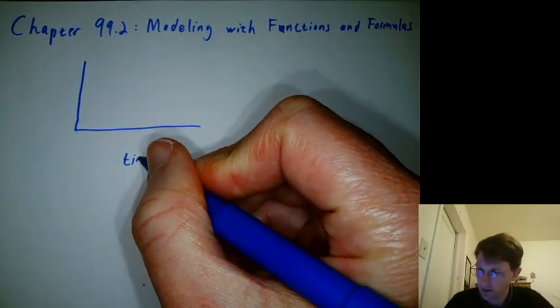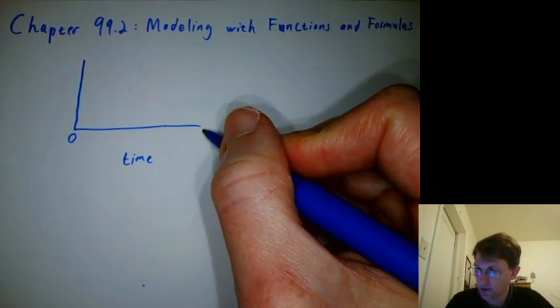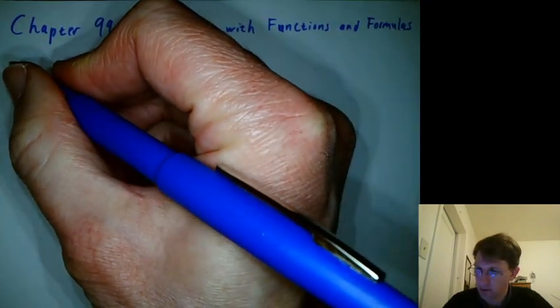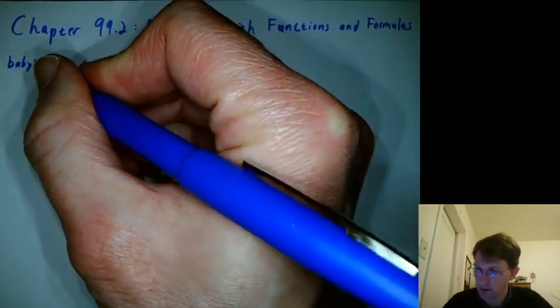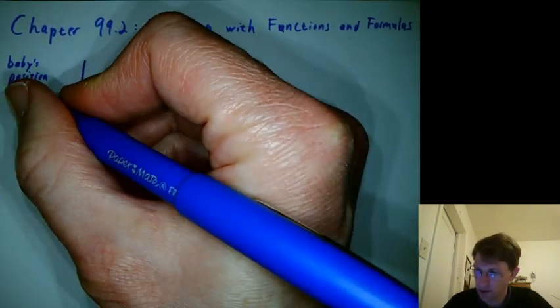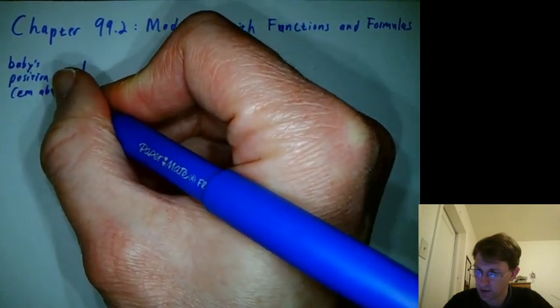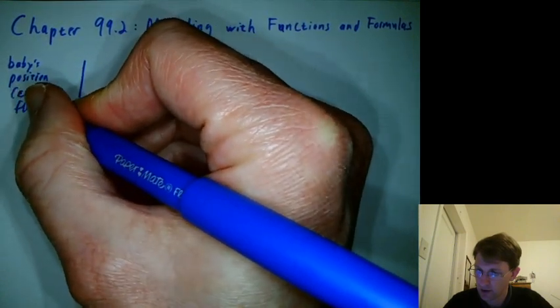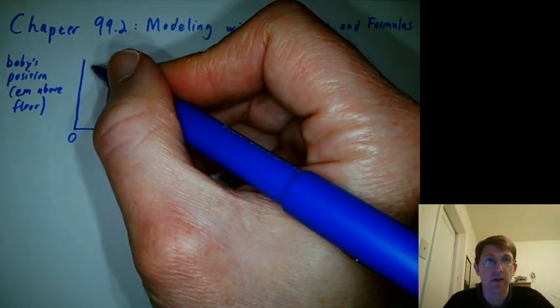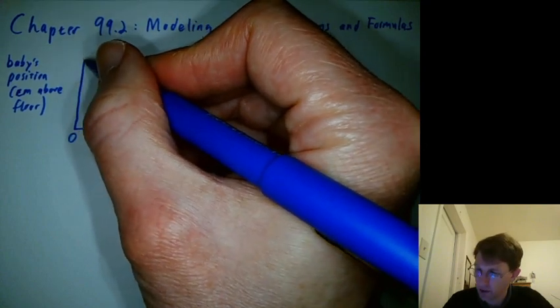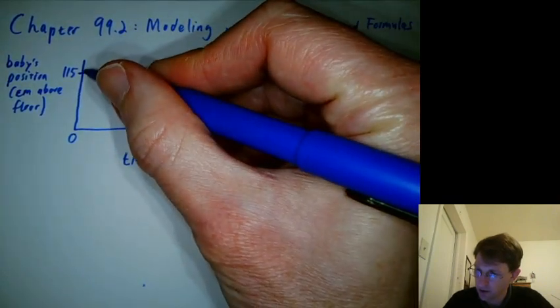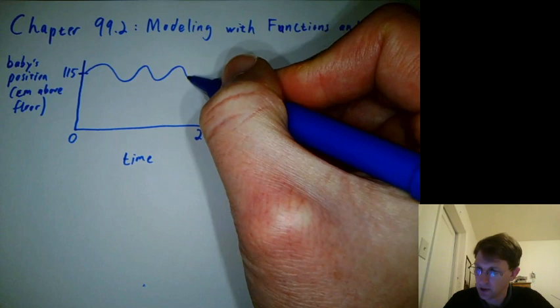Okay, there's a good chance you drew a graph something like this. Probably had time on this axis, zero to I don't know, maybe two seconds. You probably had the baby's position on this axis, maybe measured in centimeters above the floor. I was sitting down, so it's not like it was a whole hundred and eighty centimeters or whatever. So it was probably 115 and the baby was moving up and down and up and down and up and down.